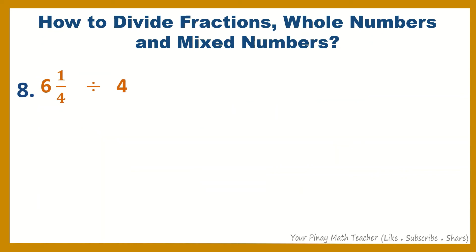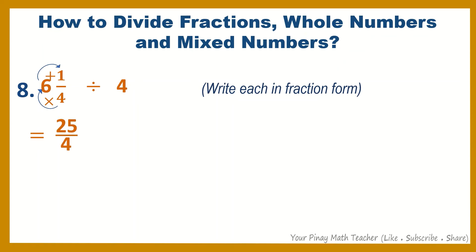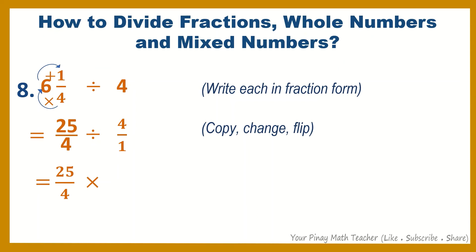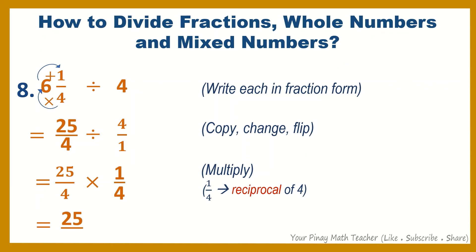Number 8: 6 and 1 fourth divided by 4. Writing them in fraction form, 6 and 1 fourth becomes 25 over 4, divided by 4 over 1. Then copy 25 over 4, change divide to times, and flip 4 over 1 to 1 fourth. Then multiply. 1 fourth is the reciprocal of 4. Since no two numbers can be reduced, multiply both numerators to get 25 and both denominators to get 16, which equals the mixed number 1 and 9 over 16.